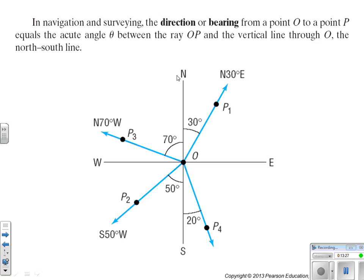And check this out. P4 is 20 degrees. So, P1 is north 30 degrees east. It's in the northeast quadrant, and it's 30 degrees from the north-south line. P2 is in the south west quadrant, and it's 50 degrees from the north-south line. P3 is in the northwest quadrant, and it's 70 degrees from the north-south line. So your turn. Put P4's direction or bearing on your paper.